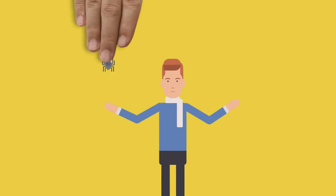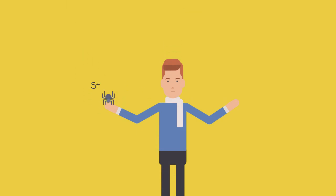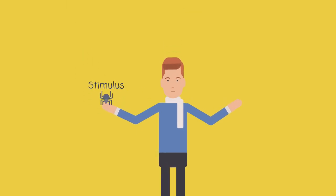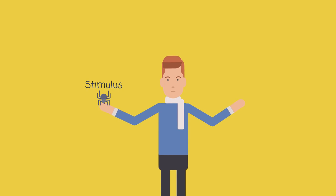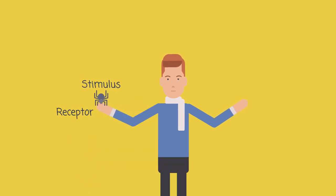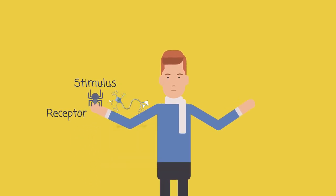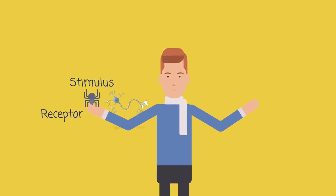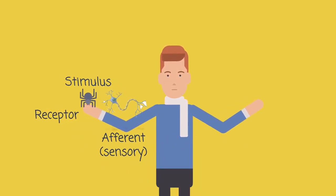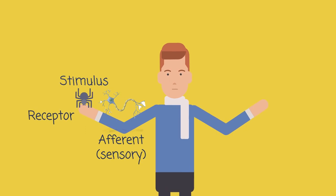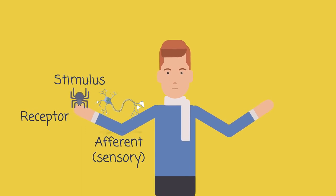The spider is considered a stimulus from the outside world. You receive this stimulus by your touch receptors, which are connected to your sensory nerves, also known as afferent. Afferent means toward.